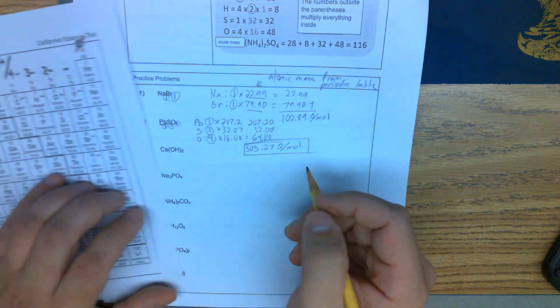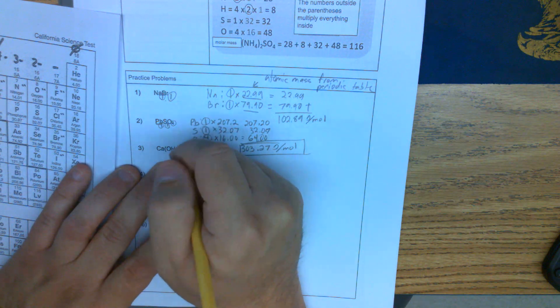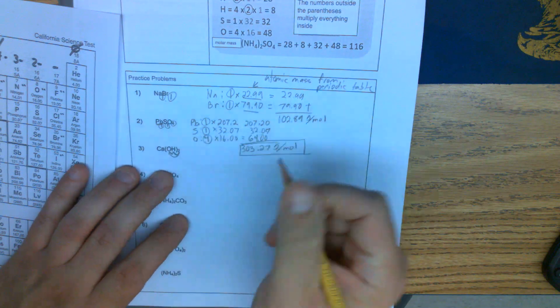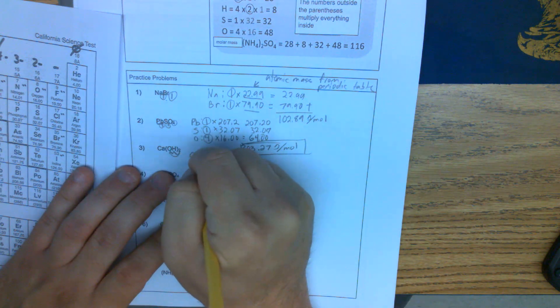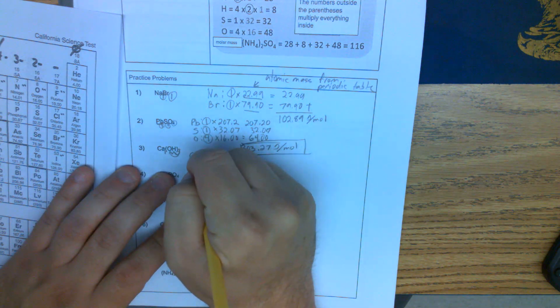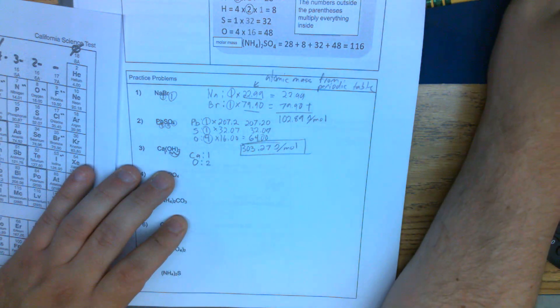Next one, we have to read the parentheses. When we see these parentheses, the two outside multiplies everything inside. If we're reading this, we have Ca. We have one Ca, O we have two O's, and H we have two H's.